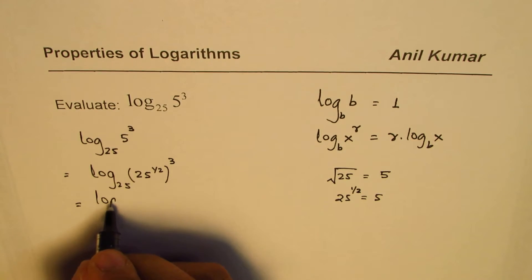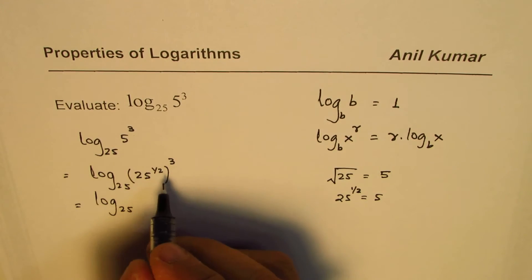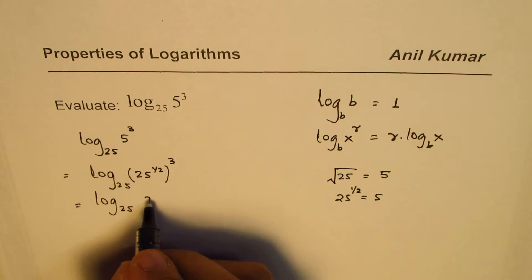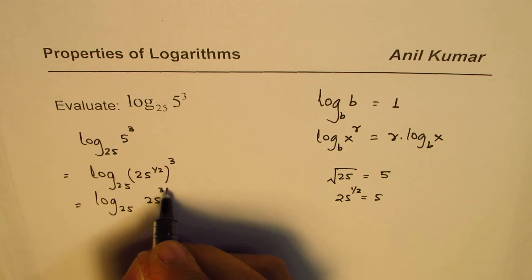Now we could write this as log to the base 25, expand it, so we get 25 to the power of 3 over 2.